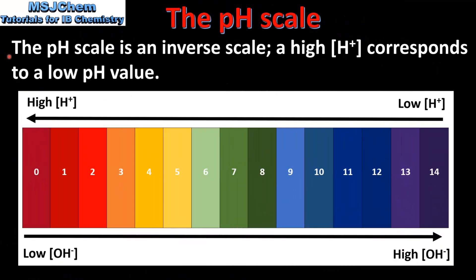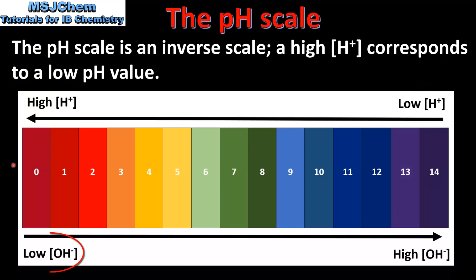The pH scale is an inverse scale. This means that a high hydrogen ion concentration corresponds to a low pH value. As we can see from this diagram, substances with low pH values have high concentrations of hydrogen ions. Conversely, substances with high pH values have low concentrations of hydrogen ions. We also see that a high concentration of hydrogen ions corresponds to a low concentration of hydroxide ions.